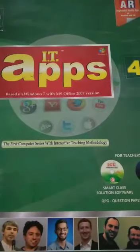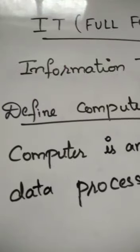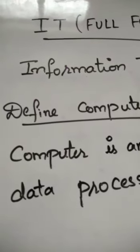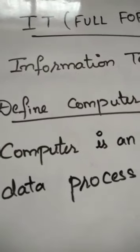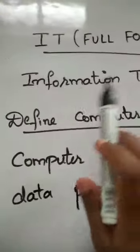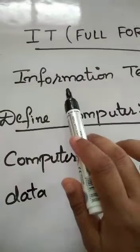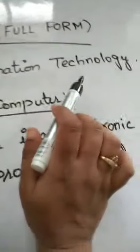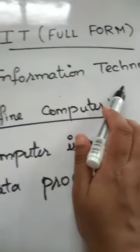Let's get started. Before going to lesson number 1, let us learn some basic concepts. The full form of IT is Information Technology — I stands for Information, T stands for Technology.